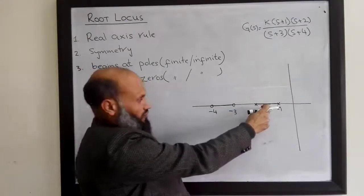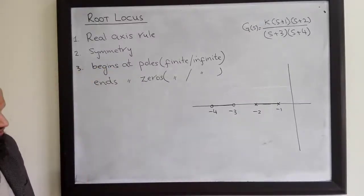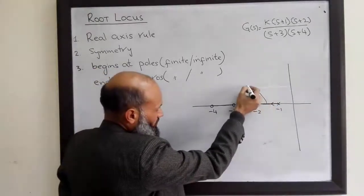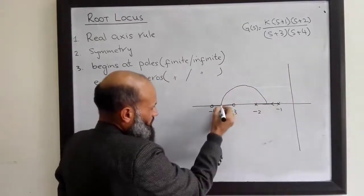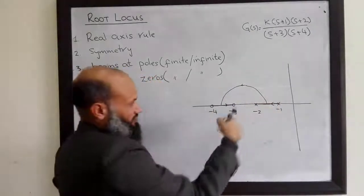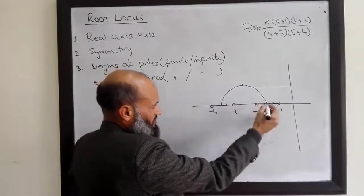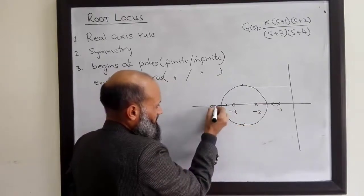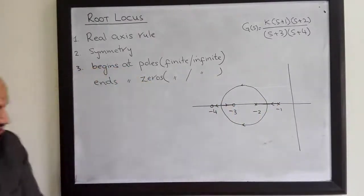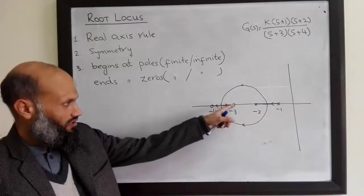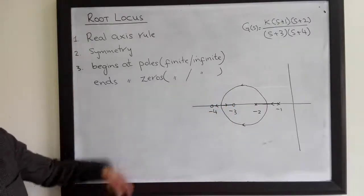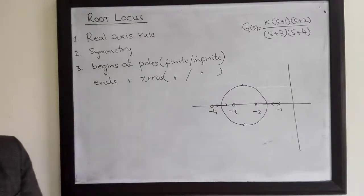The root locus will start from the poles and terminate at the zeros. A rough sketch: root locus will follow some path and finally approach the zeros. Since root locus is symmetrical about the horizontal axis, the root locus which started from the poles will ultimately reach the zeros. In this particular example the zeros were at some finite position, so the root locus approached that position. If the zeros are somewhere at infinity, the root locus will approach infinity.